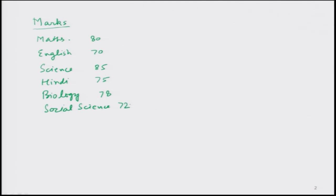In this structure, what do you find? We have two types of data: on one side, these are characters (the subject names), and on the other side we have numbers (the marks). So we have written a combination of characters and numbers. In simple language, we have created a list of the marks in every subject which a candidate has got in class 10. This is simply a list.